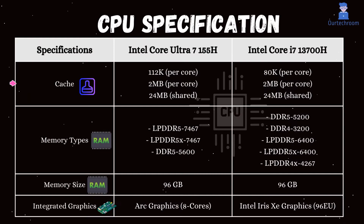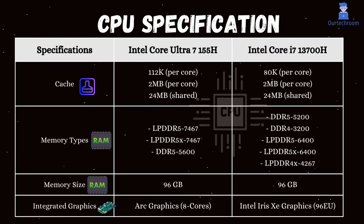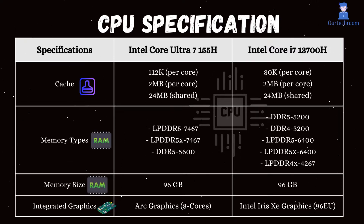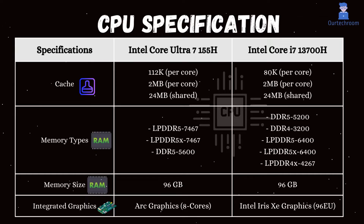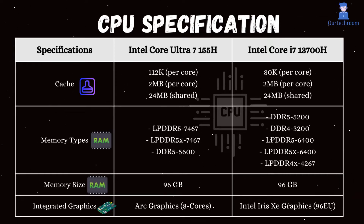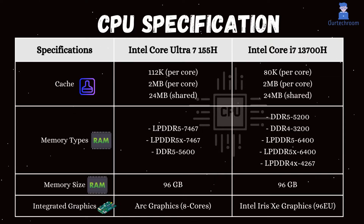Both of these processors have a similar cache size of 2MB per core for L2 cache and a shared 24MB for L3 cache. However, the L1 cache of the Intel Core Ultra 7 155H is slightly larger than that of the Intel Core i7-13700H.